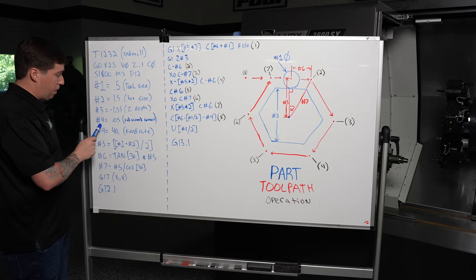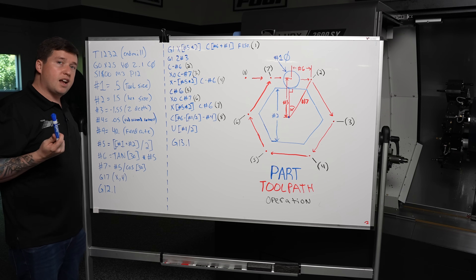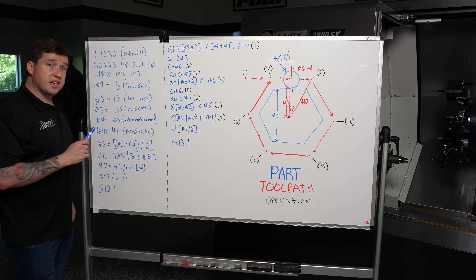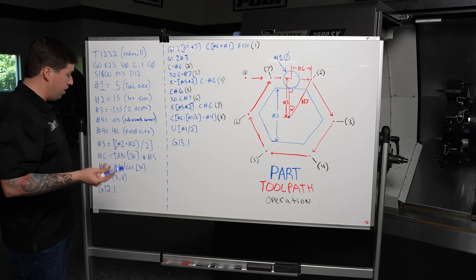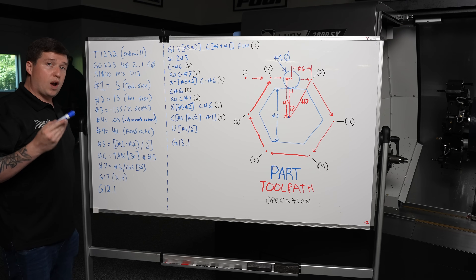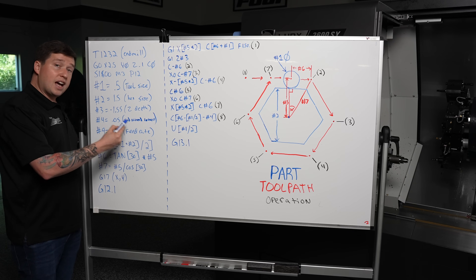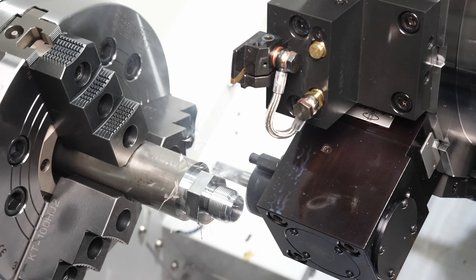Pound four equals 0.050 — this is going to be the radius that it does around the corners of the hexagon to not cut air and make the hexagon sharp. This does exist in the initial macro that's in the description. That is going to be the radii around the corners of your hexagon. Moving on to pound nine equals 40 — that is your feed rate. In this case, I am going 1800 RPM at 40 inches a minute.